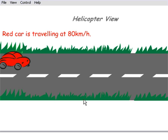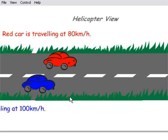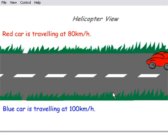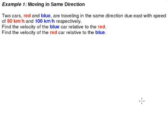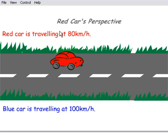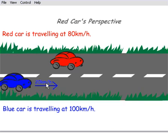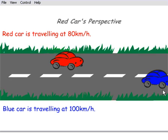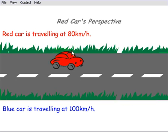We have a red car traveling at 80 km/h and a blue car traveling alongside at 100 km/h — this is the helicopter view. To find the velocity of the blue car relative to the red car, we put ourselves in the perspective of the red car. According to the red car, which is traveling at 80 km/h, the blue car is overtaking it at a speed of 20 km/h. You won't see the blue car traveling at 100 because you yourself are moving at 80.